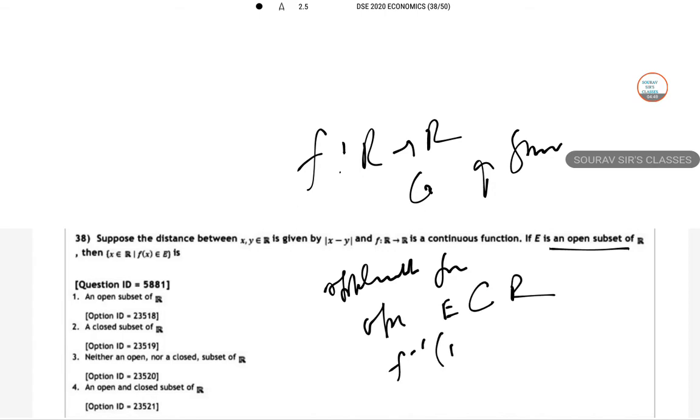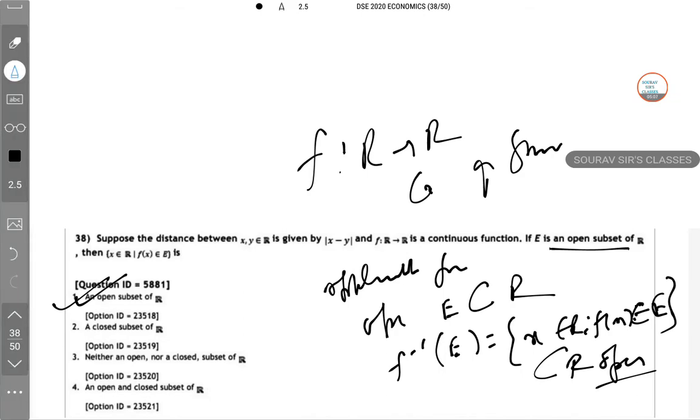So f⁻¹(E) = {x ∈ R: f(x) ∈ E}. So R becomes open in this case. So the answer to this question is A. 38 is A. 38 is done. Now we proceed to 39.